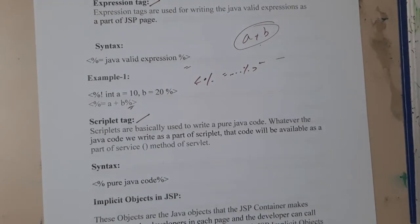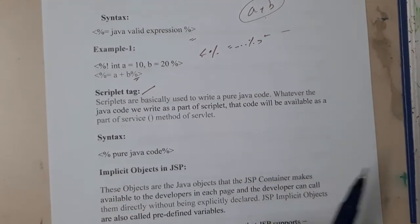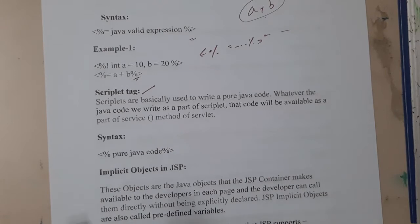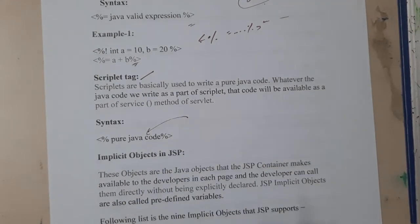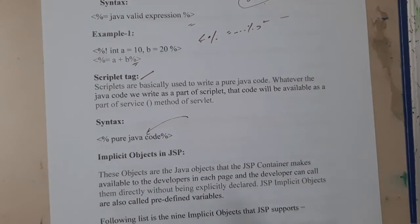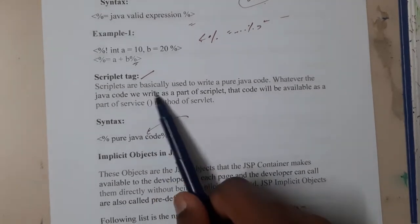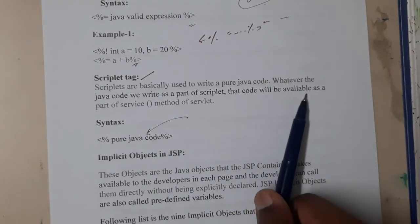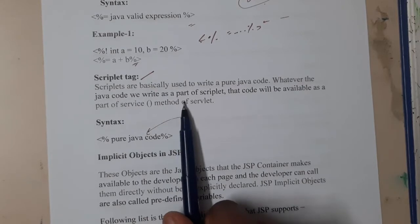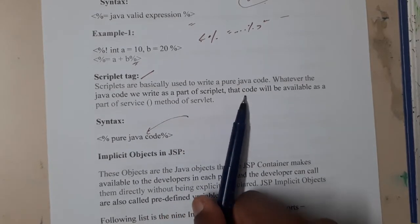Similarly, scriptlet. Scriptlet is simply writing the whole Java, pure Java code. You'll be directly writing into it. Scriptlets are basically used to write pure Java code. Whatever Java code we write as a part of scriptlet, that code will be available as a part of service method of servlet.